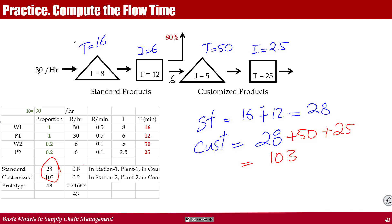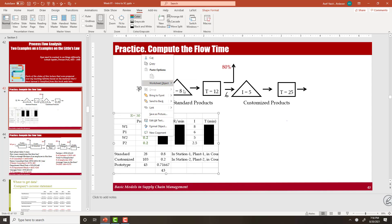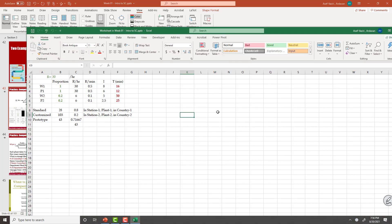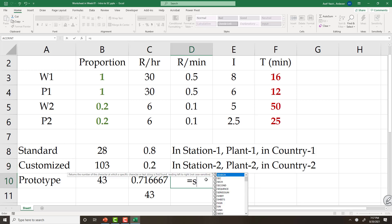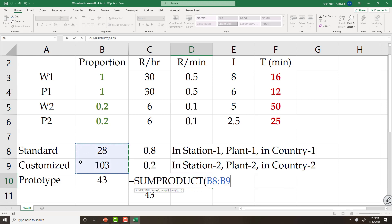We know that 80% follow this path, and 20% follow this path. If we want to know, on average, how long it takes a prototype flow unit to pass through this system, we've got SUMPRODUCT. 28, 80%, 103, 20%. I compare and I type: equal to SUMPRODUCT. These two numbers and these two numbers, that is the average of them, and I get 43. So on average it takes 43 minutes to pass this system for the prototype product.